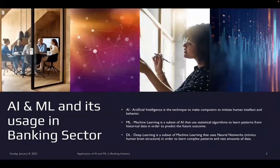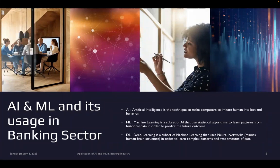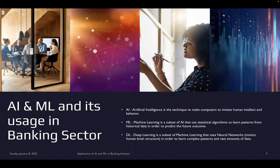Let me start. I want to discuss AI, ML, and its uses in the banking sector, specifically in home lending. There are three basic aspects: AI, ML, and DL. There is a confusion among people wanting to join the industry that AI, ML, DL, and NLP are all the same — which is not the case. Artificial intelligence is the technique to make computers imitate human intellect and behavior. Machine learning is a subset of AI that uses statistical algorithms to learn patterns from historical data to predict future outcomes. Deep learning is a subset of machine learning that uses neural networks to learn complex patterns from vast amounts of data.